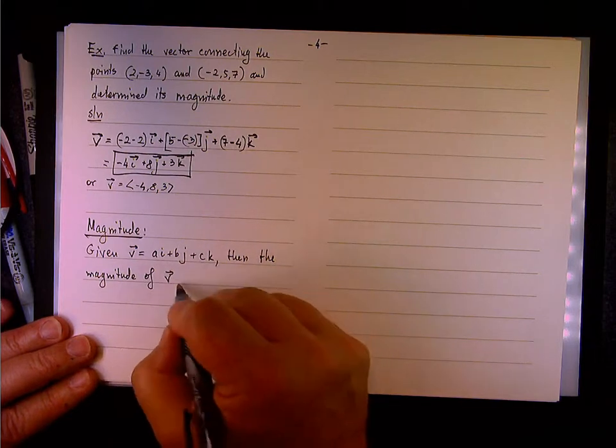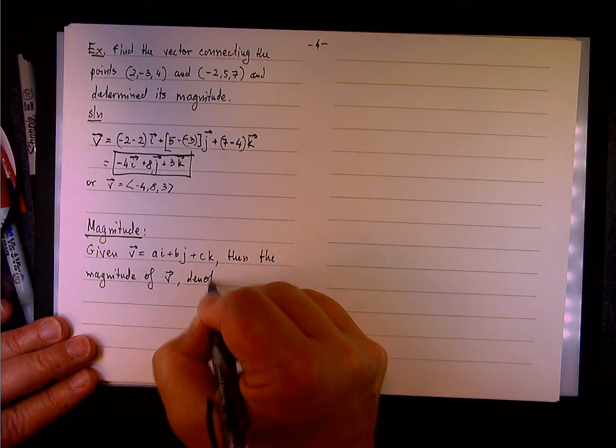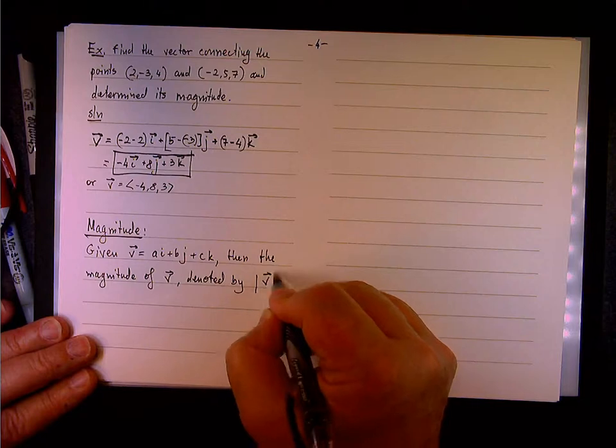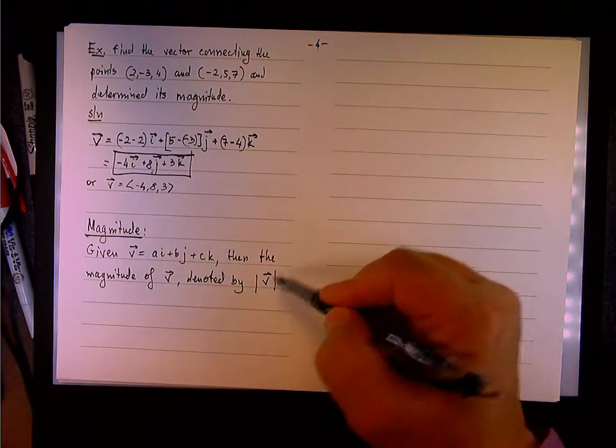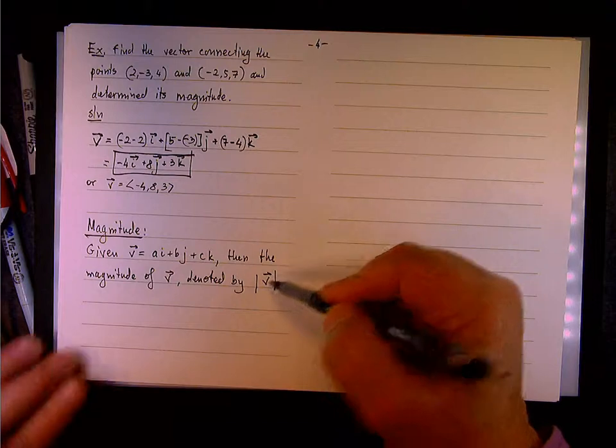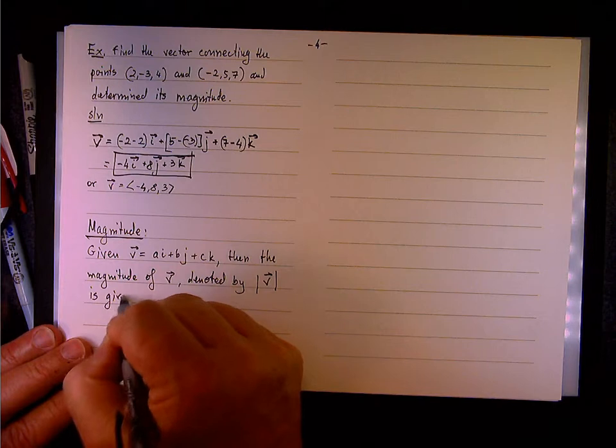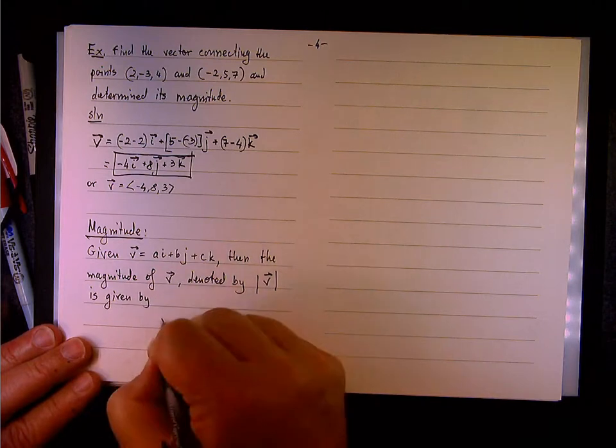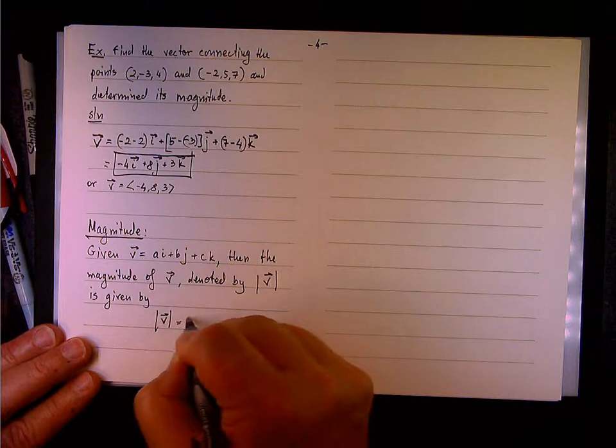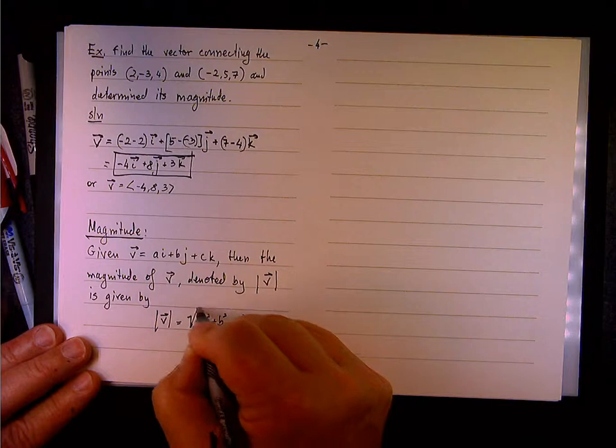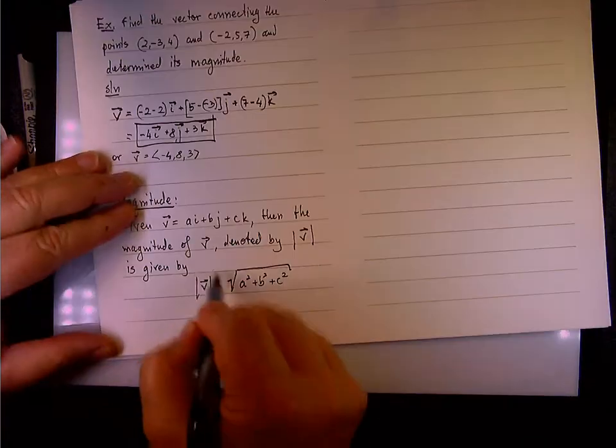The magnitude of v, denoted by, and I'll use this notation, as I said, the book does not, the book used bold instead of arrow anyway, is given by, so we're going to write |v| like so. It will be the square root of a² + b² + c². So this is the general form.